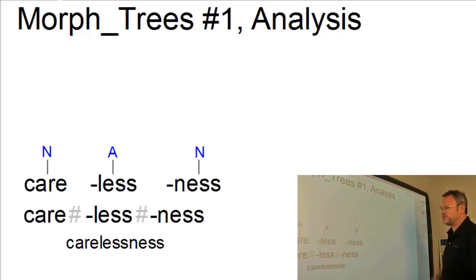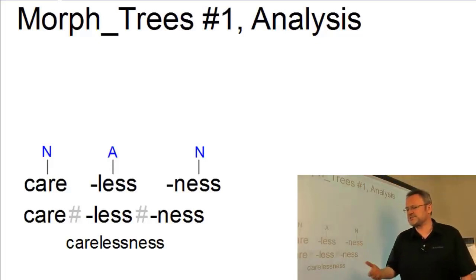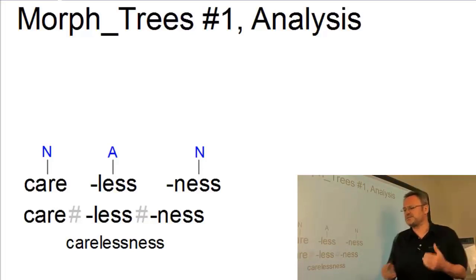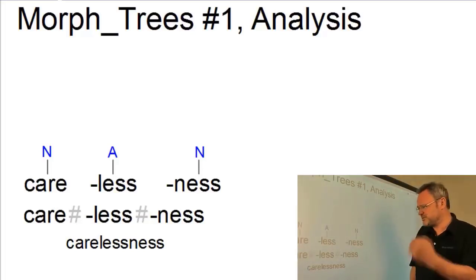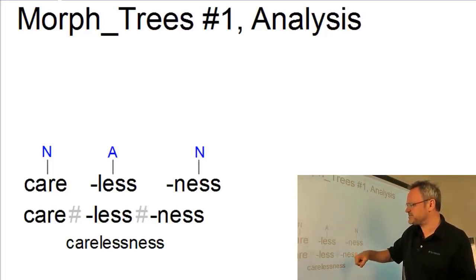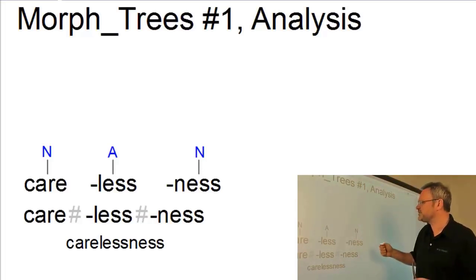Step two is to assign word class categories to each morph. Now the affixes, less and ness, are associated with inherent word classes. That is, with those word classes that they would generate when added to a base form. Less turns nouns into adjectives, so it is marked A. Ness turns adjectives into nouns, so it is associated with the word class noun.